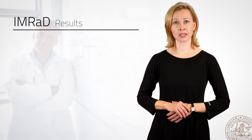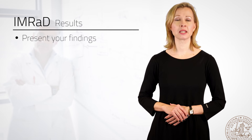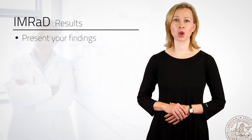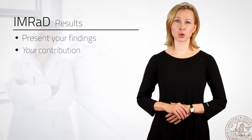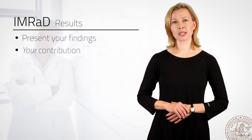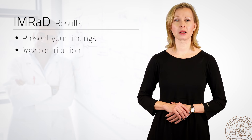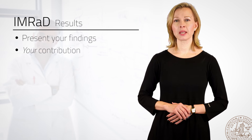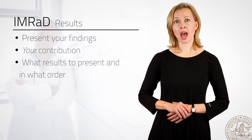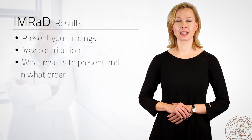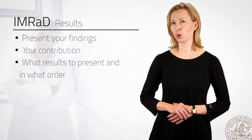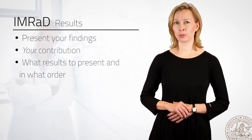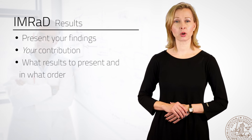The results section — the R in the acronym IMRAD — is where you present the findings of your study. This is the most important section of your paper, as this is where you can show what you've actually found. This is your contribution to the field. It might seem that reporting your findings is a simple task, but things are not always as simple as they may seem. As the author, it's up to you to decide what results you want to present and in what order, so that some results get foregrounded while others get backgrounded. Presenting your results in a particular order is part of telling a bigger story of your research.